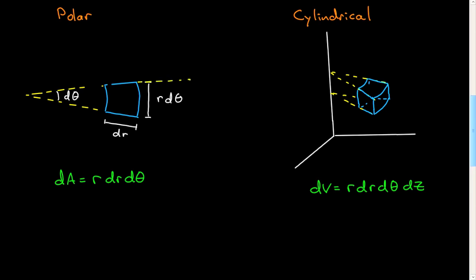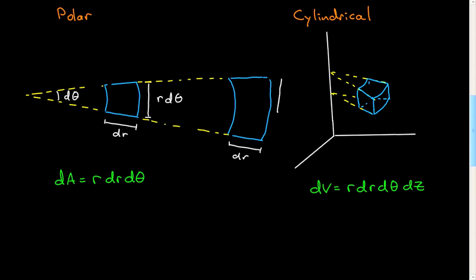Let me extend this out further. For the same dr, the effect on this area will be the same contribution no matter where you are. However, the same dθ will give a bigger contribution to the area farther out than it did close in, simply because r is larger. So that r goes with the dθ. Every time you have an angular coordinate, the contribution to a length is going to be determined by the change in that angular coordinate times a distance from the center or axis at which that angle is swinging. That will be the case for all the coordinate systems.